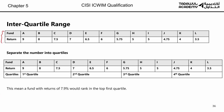For example, if CISI gives you funds A to L — that's 12 funds — and asks where a fund with a 7.9% return would be placed, you divide the set into quartiles. The first quartile would be funds A, B, C; the second quartile the next group; third quartile G, H, I; and fourth quartile J, K, L. Fund Z with 7.9% would fall between B and C, placing it in the first quarter. That's what we covered previously.